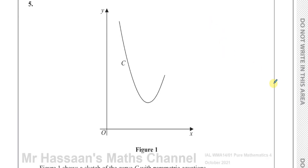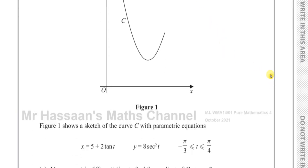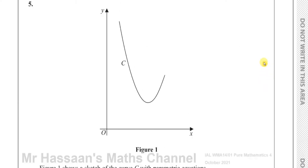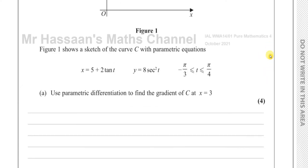This question here is all about parametric equations. We're told there's a sketch of a curve C, which has parametric equations x equals 5 plus 2 tan t, y equals 8 secant squared t, where t is between minus pi over 3 and pi over 4. We want to use parametric differentiation to find the gradient of C at x equals 3. They don't want us to change this into Cartesian form quite yet. They are going to ask us to do that in part B.